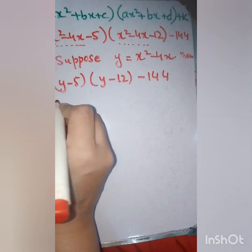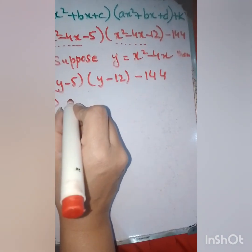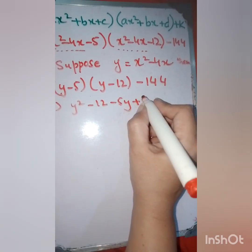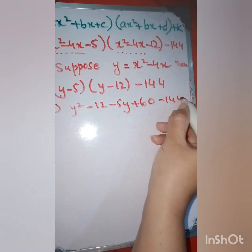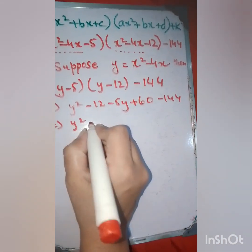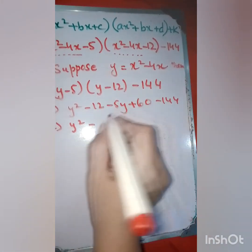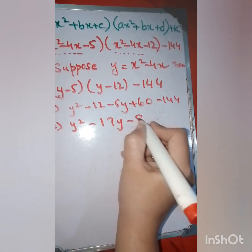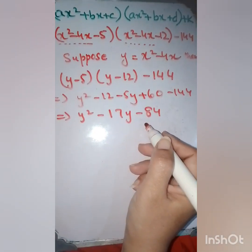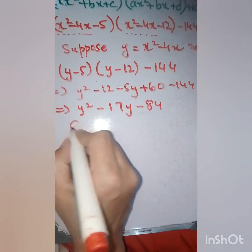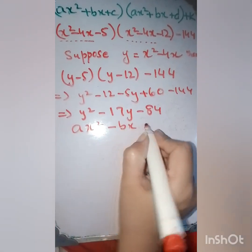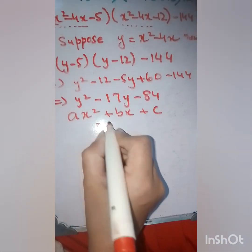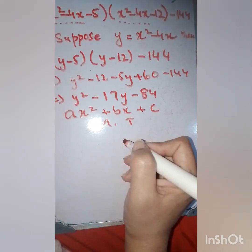Now we are going to multiply them, so we get y² minus 12y minus 5y plus 60, minus 144. Combining, we get y² minus 17y minus 84. This is the final expression in quadratic form. As you know, this is a quadratic, so I will apply the middle term formula and by doing so I will get two factors.